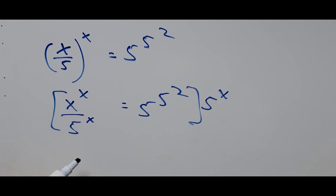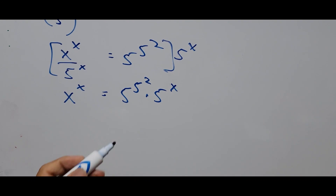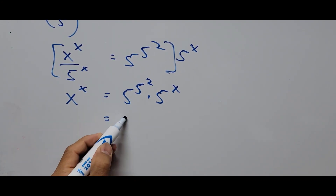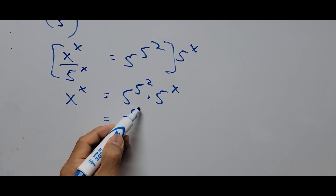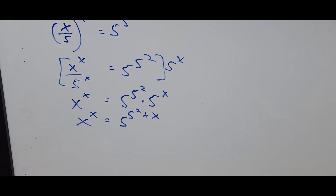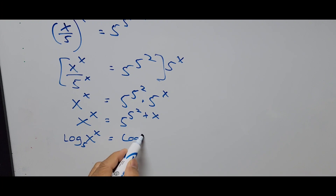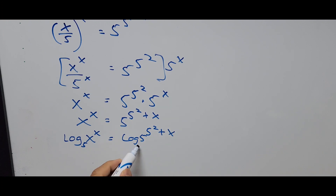This is now x to the power of x equals 5 to the power of 5 squared times 5 to the power of x. Simplifying the right side, this is now 5 raised to the power of 5 squared plus x, and the left side remains x to the power of x. From here we apply the law of common logarithm: log of x to the power of x to base 5 equals log of 5 raised to 5 squared plus x.